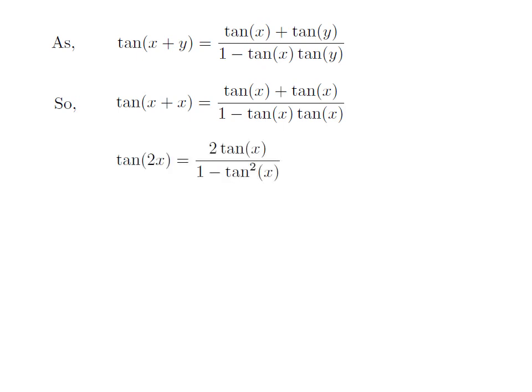So this implies tangent of 2x is equal to 2 times tangent of x divided by 1 minus the square of tangent of x. This is the identity we set out to derive.